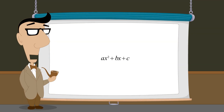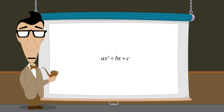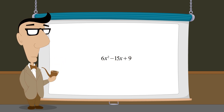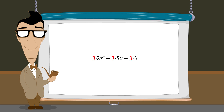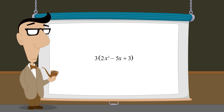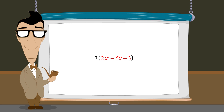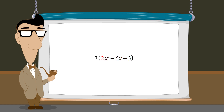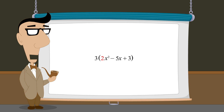In some cases, the values of a, b, and c may not allow us to produce a quadratic expression with an x-squared coefficient of one. Take, for example, the quadratic 6x-squared minus 15x plus 9. Although all three terms have a common factor of three, once we factor out the three, the remaining quadratic expression will be simpler to factor by inspection. However, we are still not left with a quadratic whose x-squared coefficient is one. So how do we go about factoring a quadratic like this using the inspection method?